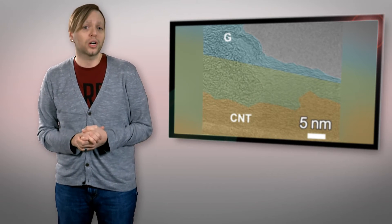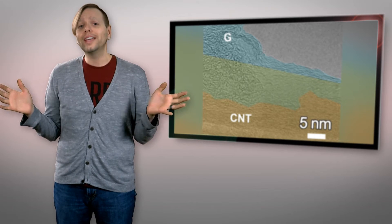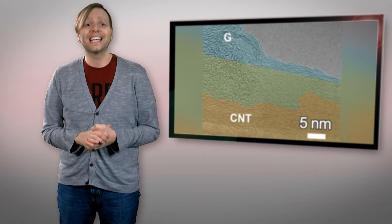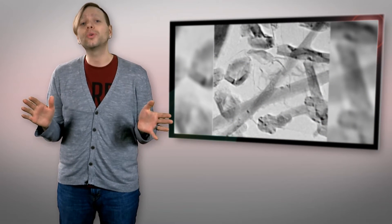But researchers are finding ways to work around that problem. Not only have MIT scientists recently developed a 3D version of graphene that is 10 times stronger than steel with a fraction of the density, but now researchers at Rice University have used carbon nanotubes to reinforce graphene foam.